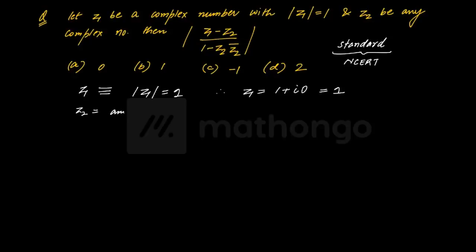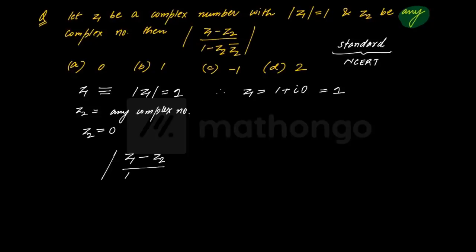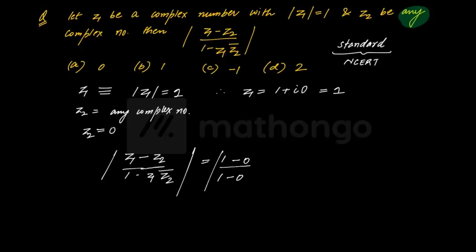Usne doosra kya kaha - z2 any complex number. Yeh jo 'any' word hai na, yeh sabse bada source hota hai - yeh yaad rakhna hai is baat ko. Whenever you are given a word called 'any' - any complex number - toh yaar, very very important. When this is 'any', that means I can assume it to be any. Any ka kya matlab hai - chalo, usko 0 hi maan lete hain. Ab agar hum answer options pe jaate hain, humein solve karna tha z1 minus z2 upon 1 minus z2 bar, z1 mod bhi ho sakta tha. Toh agar yeh cheez solve karni thi, yeh 1 minus 0 upon 1 minus 0 mod - this is equal to 1. The option - straight away simple.